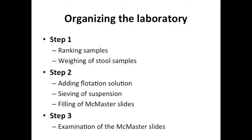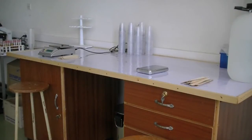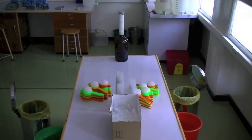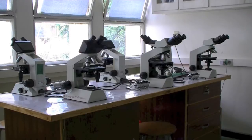Which is followed by sieving the suspension and filling the McMaster slides. In the third step, the McMaster slides are examined microscopically. To efficiently organize the laboratory, it is recommended to create one workflow for these three steps by separating each step on a separate table. Table 1 is used for ranking and weighing the samples, table 2 for completing the preparation of the McMaster Egg Counting Slide, and table 3 for examining the McMaster slides.